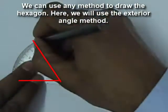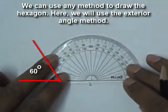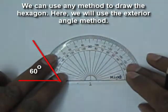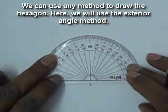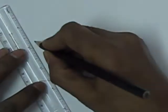We can use any method to draw the hexagon. Here we will use the exterior angle method. So external angle is 60 degree. So both side we draw lines 60 degree to the base.